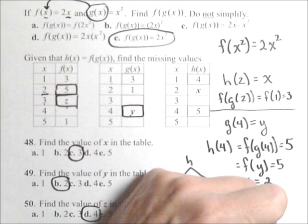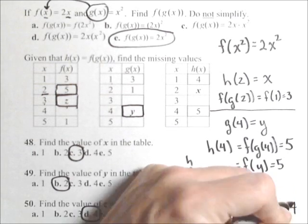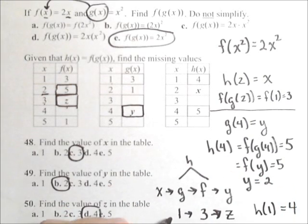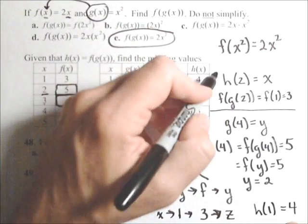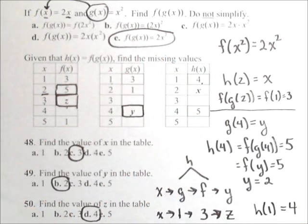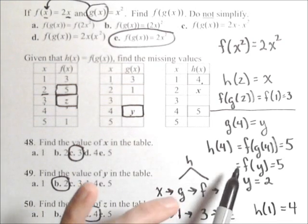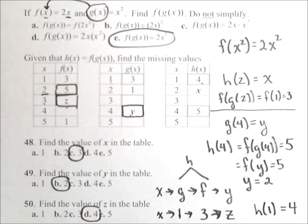We know that h of 1 has to be 4. So if we start at 1, we need to end up at 4, because that's given by our composition here. So that's a couple different ways of thinking about those. They all come from the composition though. We're just working backwards in the second two.